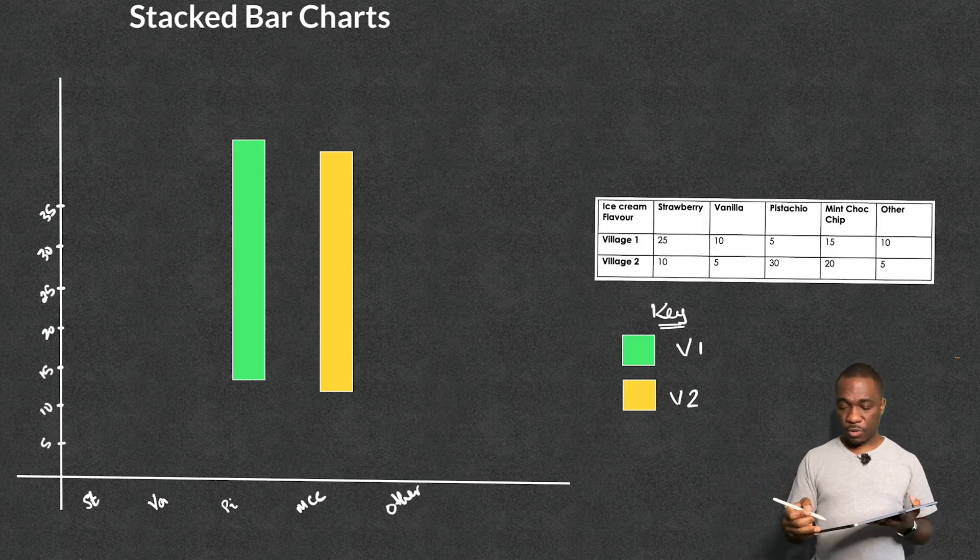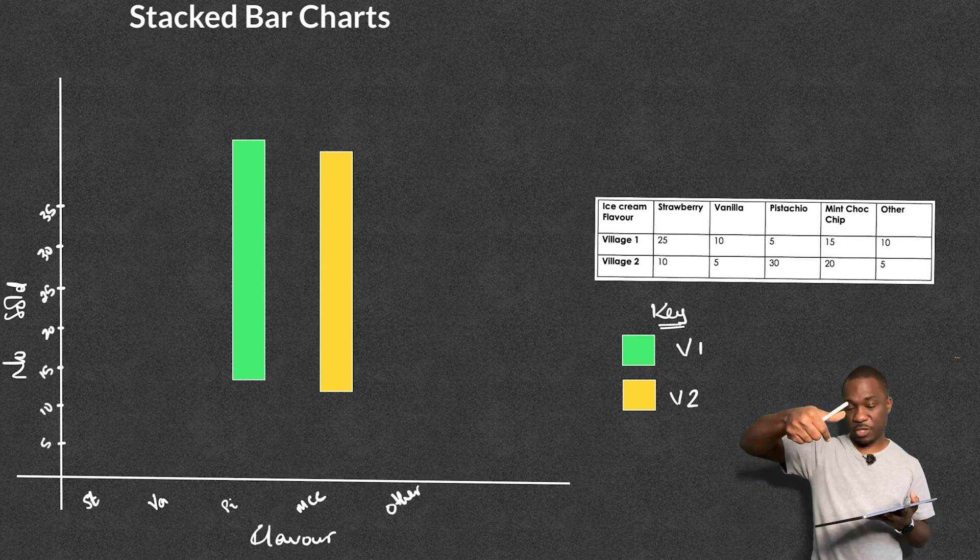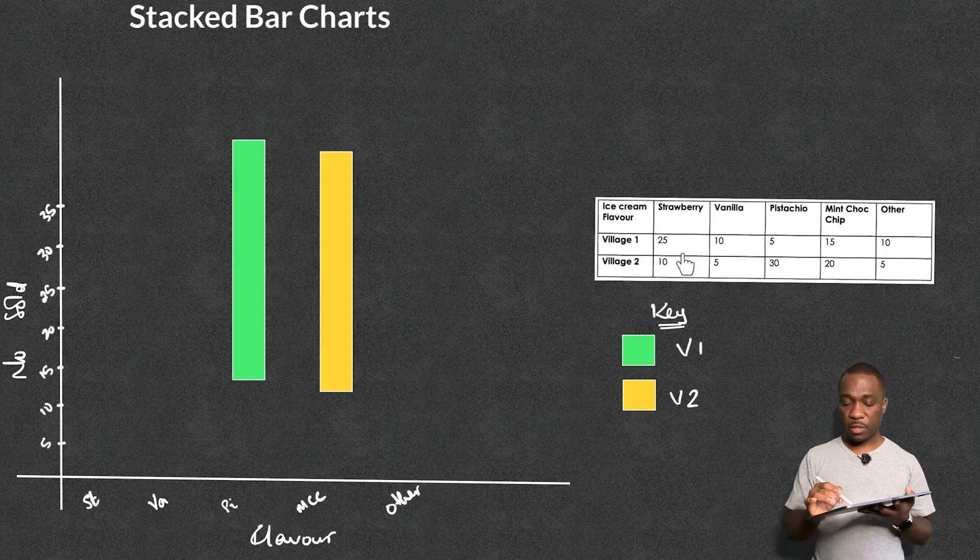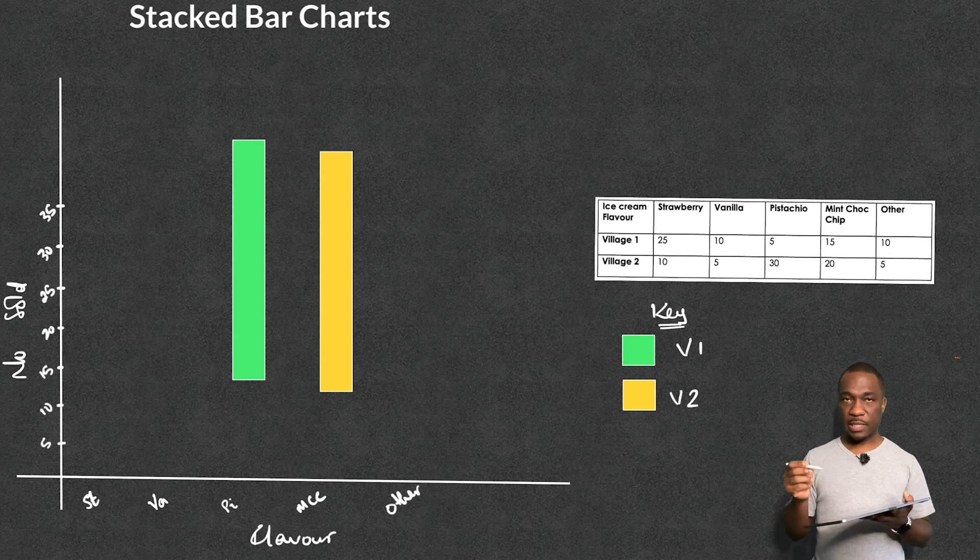Now how do I know how tall to go up on my frequency axis? This is the number of ice cream sold here. All right, so how do I know how tall to go? Well because one bar stacks on top of each other, that's why it's called a stacked bar chart. Because one bar stacks on top of each other I need the sum of what's going on here. So I noticed this is 35, that's 35, that's 35. So I know 35 is the height I need to go to. So on the scale I went up to 35.